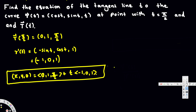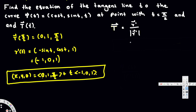The next question asks for the unit tangent vector. The unit tangent vector T(t) is equal to the tangent vector divided by the magnitude of the tangent vector. We already found the tangent vector: r'(t) = ⟨-sin t, cos t, 1⟩.